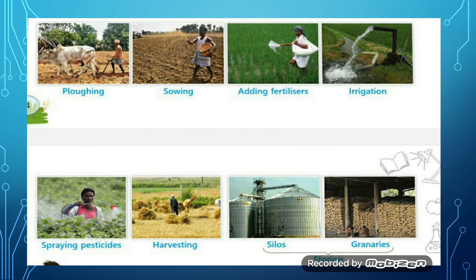Third stage: Adding fertilizers. Manure or fertilizers (khad) are needed to provide nutrients to the soil. Just as our body needs nutrients to grow, plants also require nutrients to grow well. If our soil is not fertile (upjav), then no plant or crop can grow well in that field — or it may not grow at all. So it is very important for the soil to be fertile.